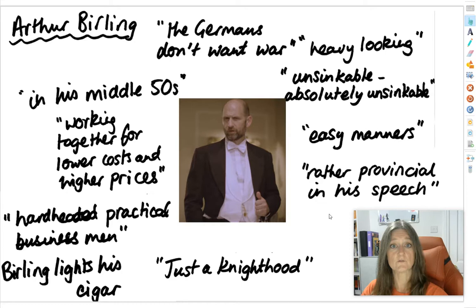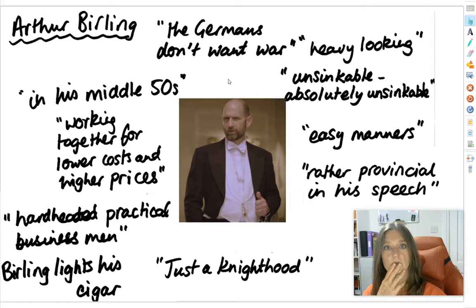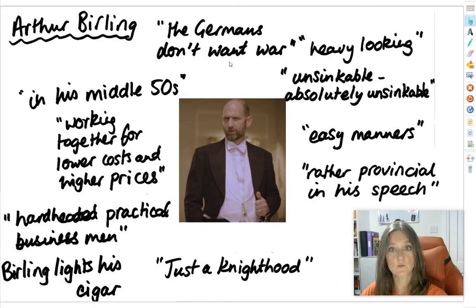We also see playwright J.B. Priestley using a lot of dramatic irony when creating Arthur Birling. He says, two years before the First World War, the Germans don't want war — and the audience would know there were actually two wars. This makes Arthur Birling wrong not once but twice. This use of dramatic irony shows that the audience should suspect and not trust anything that Arthur Birling says.